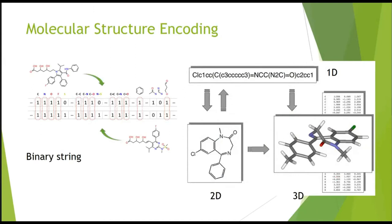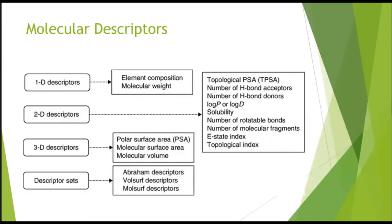3D molecular modeling and visualization are also considered among the greatest achievements in drug design technologies. Molecular properties must be encoded using descriptors. These are divided into 1D descriptors — derived from the molecular formula, such as molecular weight and element composition — and 2D descriptors, derived from the molecular graph, such as number of hydrogen bond acceptors, hydrogen bond donors, distribution coefficients log P and log D, solubility, number of rotatable bonds, molecular fragments, and various indices.